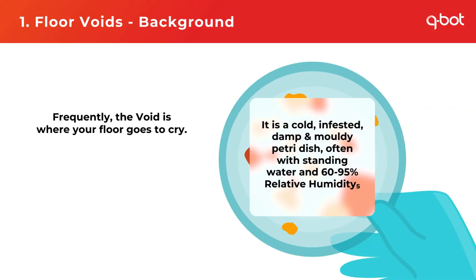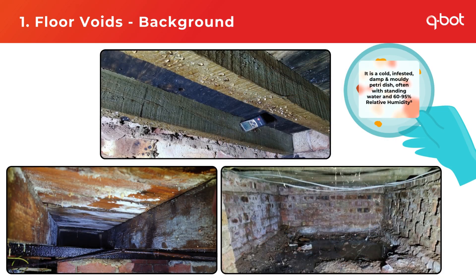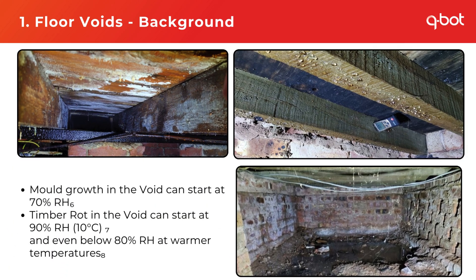So what is the floor void? We can think of the void as the area where your floor goes to cry. It's cold, infested, damp, mouldy and often has standing water with 60–95% relative humidity. Here you can see examples of images taken from voids — joists completely sodden, water, condensation and multiple types of mould growth. This is a recurring theme amongst a great deal of the voids we have come across.